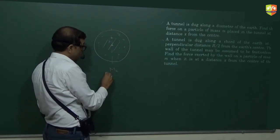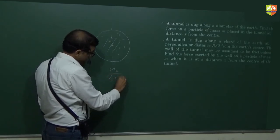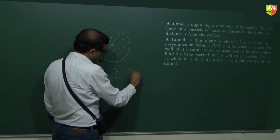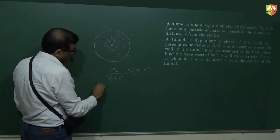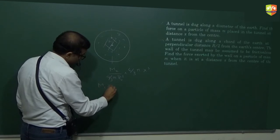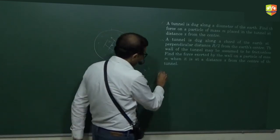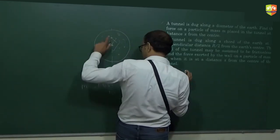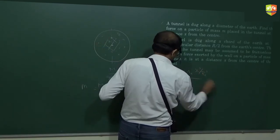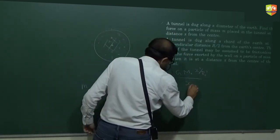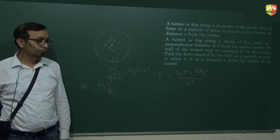So mass of that portion is how much? Mass of earth divided by... mass per unit volume is density into the volume of this portion 4 by 3 pi x cube. So you will get me x cube by re cube as the mass of the portion which is this. So the force is g mass of that portion which is me x cube by re cube divided by what? x square, distance from the center. That is the answer.